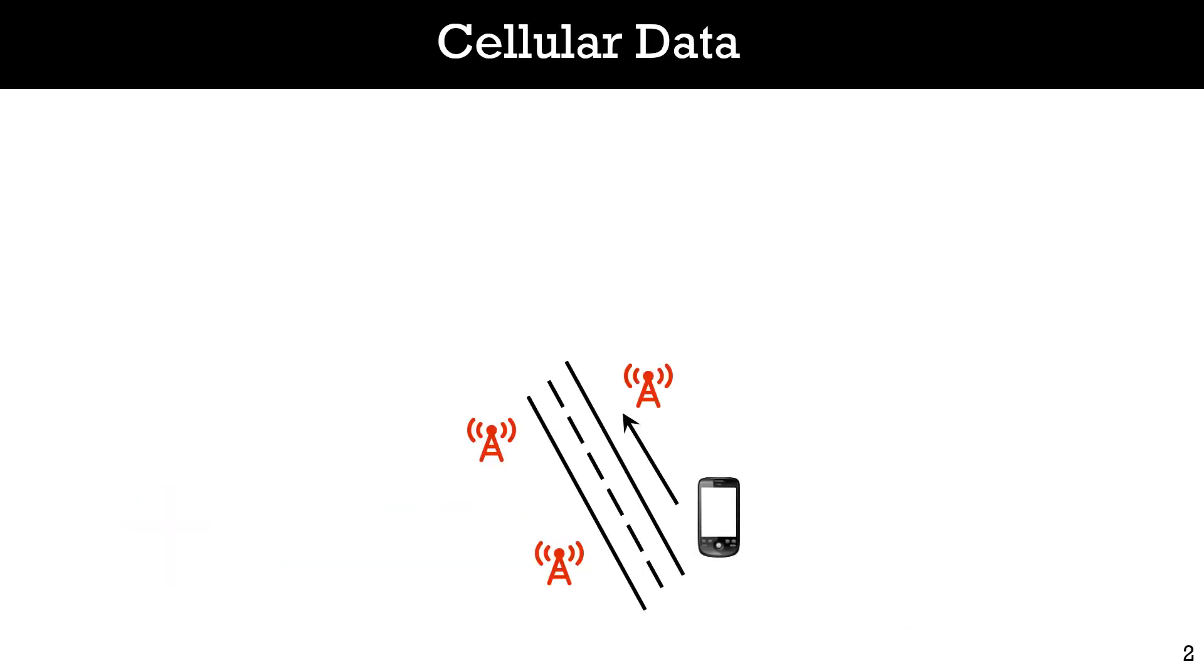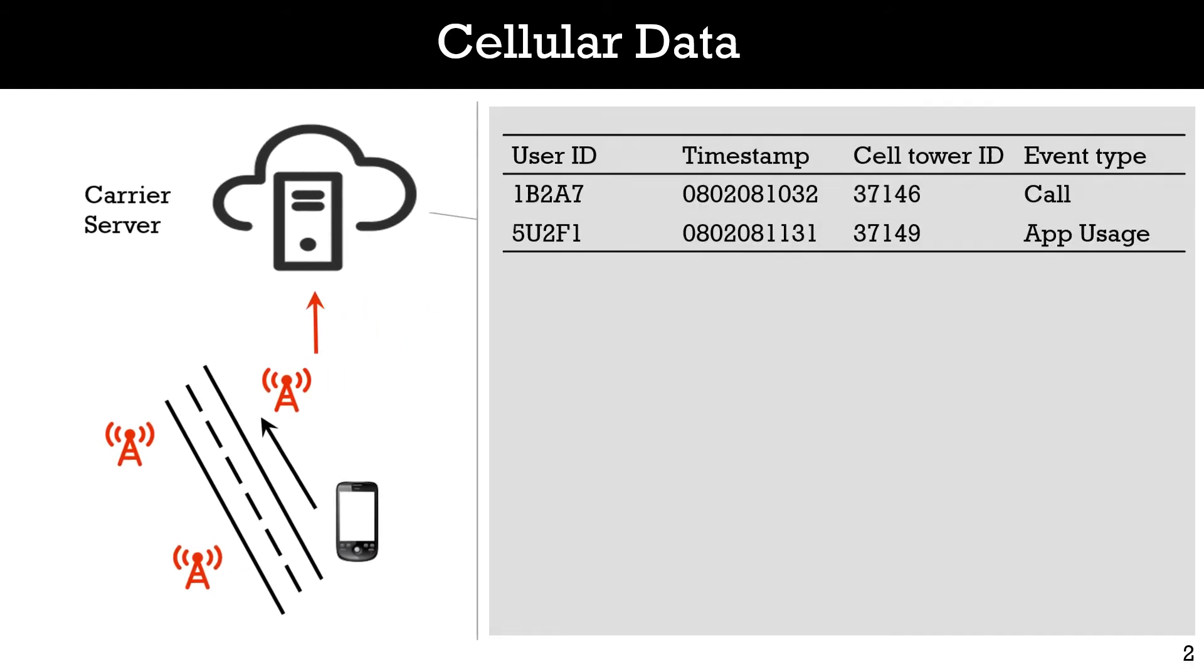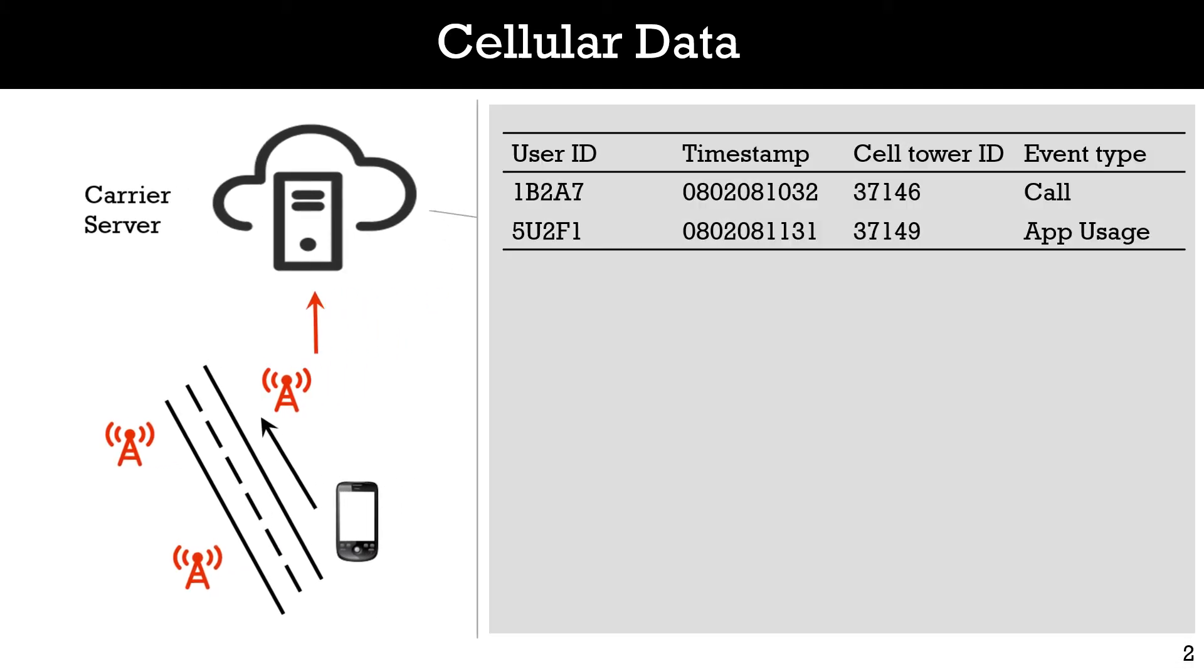When users use their mobile phones in real life, the phones communicate with surrounding cell towers. At the same time, location samples from different users will be passively collected by mobile carriers. In general, the samples record the anonymized mobile device identifier, timestamp, the associated cell tower ID, and the type of event. The type may include network service requests and location updates.